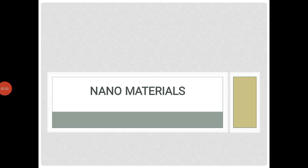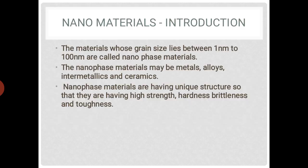Hello students, today we will be discussing the topic of nanomaterials. The materials whose grain size lies between 1 nanometer to 100 nanometers are called nano phase materials. Nano means it is 10 to the power minus 9 meters.